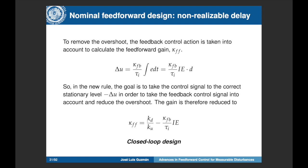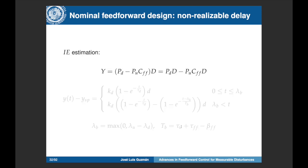In this way we obtain a new tuning rule which is a closed-loop design, because the feedforward gain is no longer calculated using only open-loop information but also incorporates closed-loop information. As you can see, we use the model parameters and the PI parameters in the calculation, but we also need an estimation of the integral error to obtain the final tuning rule. To obtain that, we use the process output response against a step disturbance.